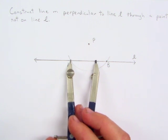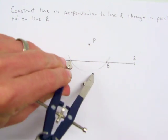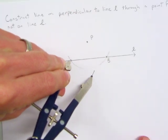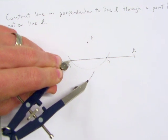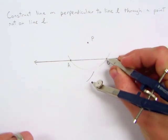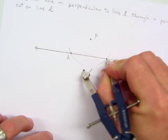Then, we want to make an arc right here, and then using the same compass measure, make an arc from point B so that it intersects your first arc.